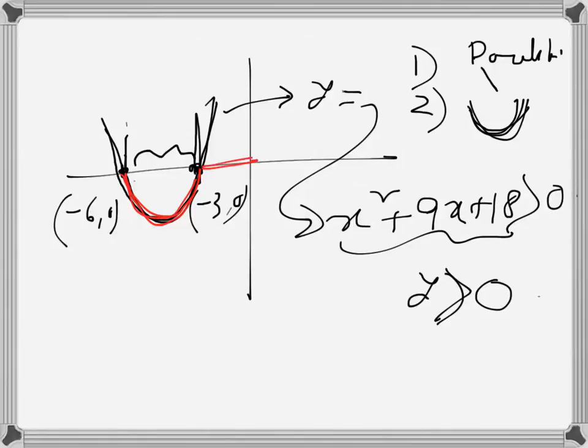So from this graph, we can write that x is greater than -3, or x is less than -6.